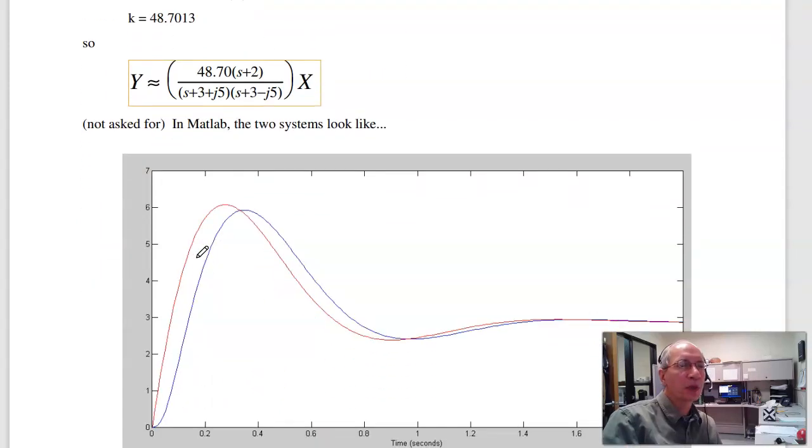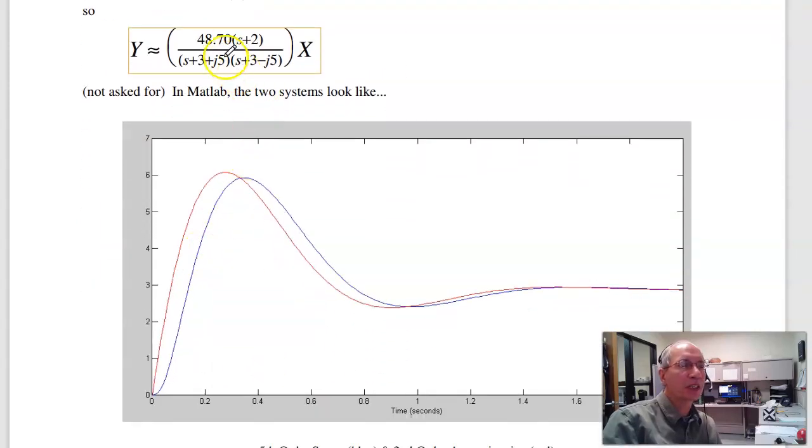Now this wasn't asked for, but if I plot the step response of the second-order system and the fifth-order system—here's the fifth-order system in blue, this is the second-order system—about the same response: same settling time, overshoot, oscillation. It's a little bit different. There's extra delay, but that's typical when you drop poles. The extra poles cause a delay in the system.